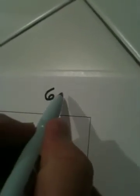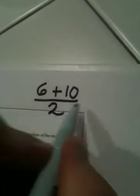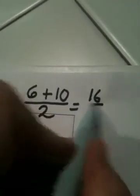If this is 6 and this is 10, 8 is midway in between. And the way I can get 8 is by taking 6 and adding 10 to it and dividing by 2. 16 divided by 2 gives me 8.